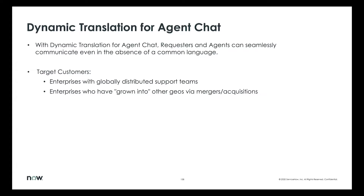Another use case is a very global company with agents and call centers all over the world where, for some reason, a call center is down and they still want to support end users in that geography. They can route those chats to a different geography, and agents can still support those end users by way of dynamic translation.